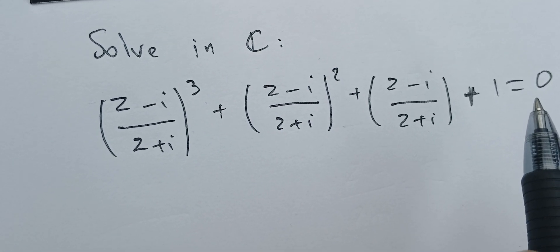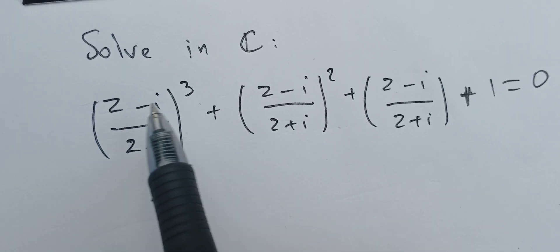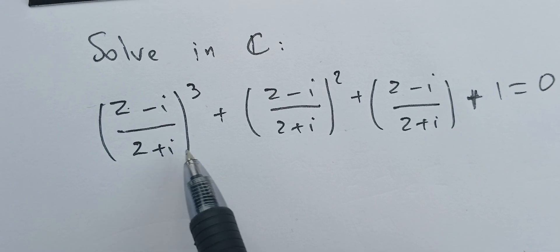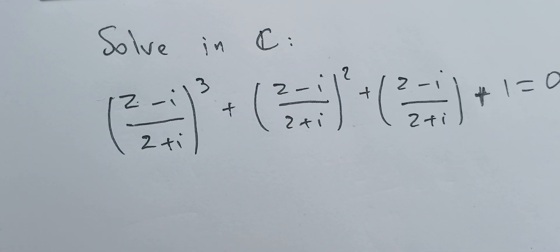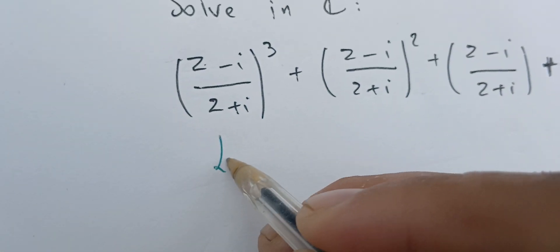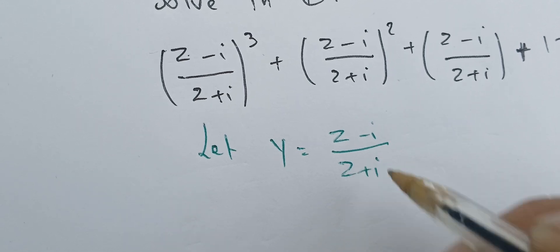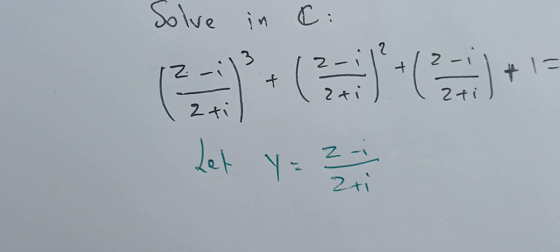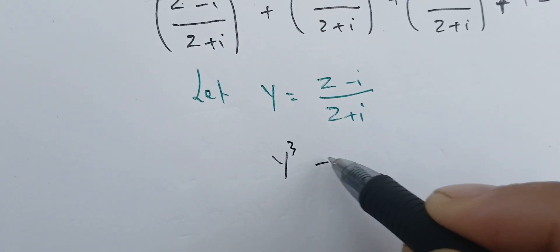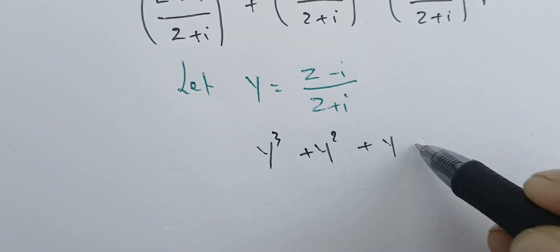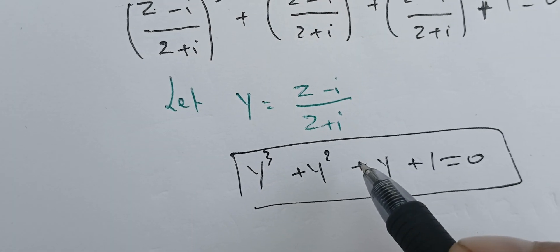An easy way to solve this one is to change variables — let y be (z minus i) over (z plus i). Once we do that, we get the new equation y cubed plus y squared plus y plus one equals zero, where y is a complex number.